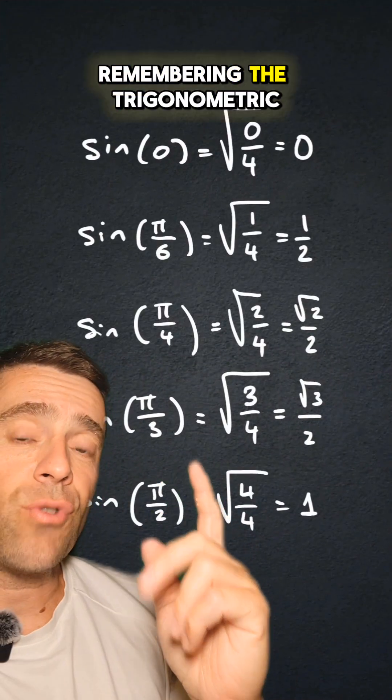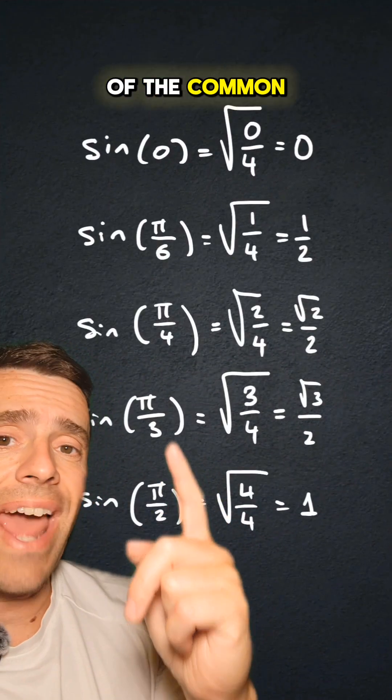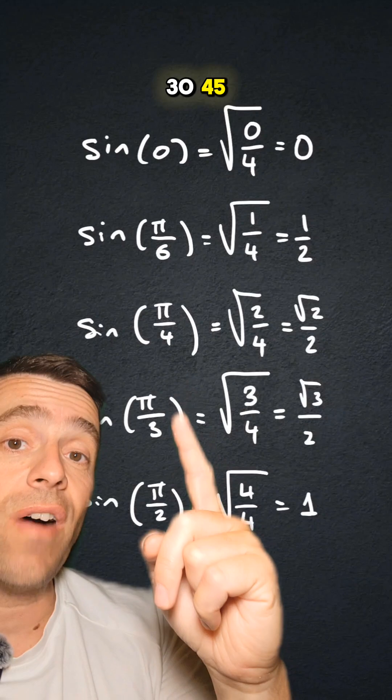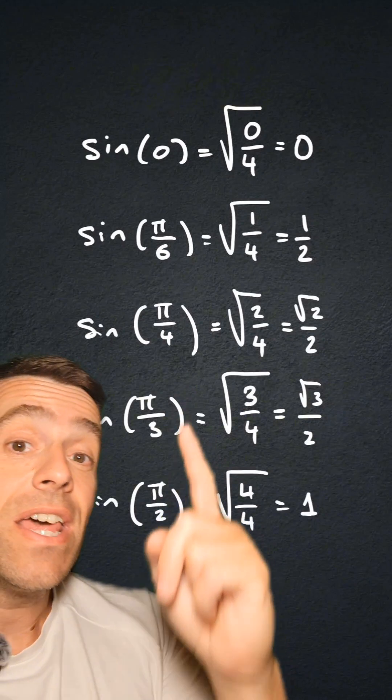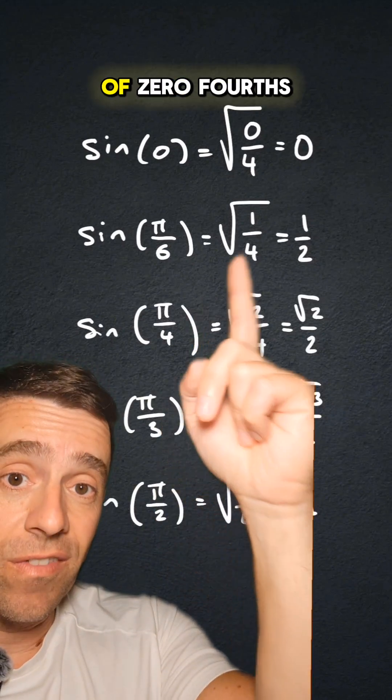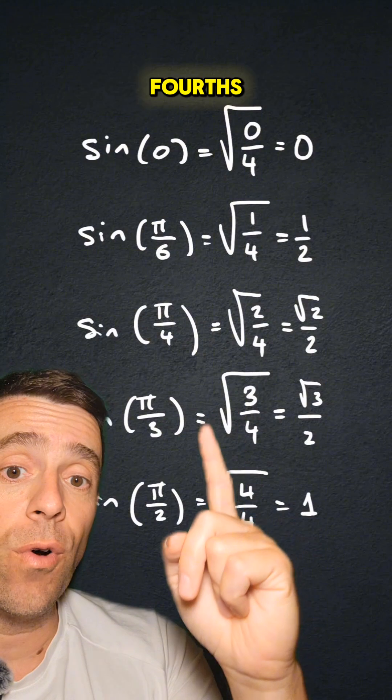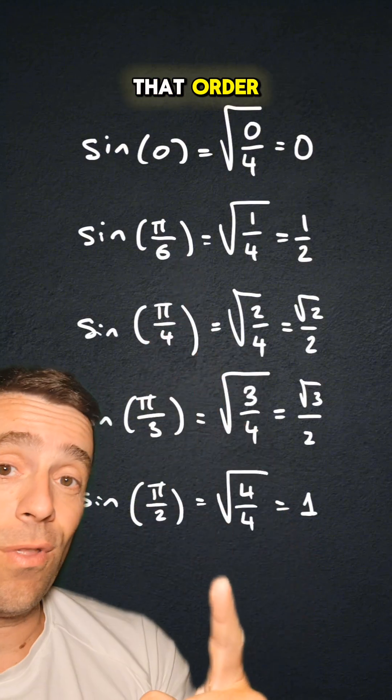Do you know about this nifty way of remembering the trigonometric values of the common angles 0, 30, 45, 60, and 90? They are just the square root of 0 fourths, 1 fourths, 2 fourths, 3 fourths, and 4 fourths in that order.